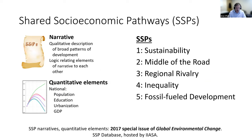The SSPs, or shared socioeconomic pathways, are a set of five societal futures produced to provide important societal inputs to integrated studies. They consist of two types of information: qualitative narratives — text descriptions of the logic of how the world may unfold in the coming decades along several dimensions — as well as quantitative elements at the national level for key variables: population, GDP, urbanization, and education.